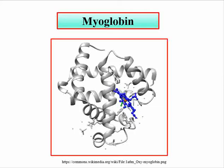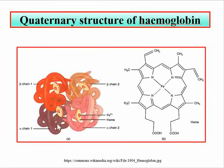Looking at the structure of myoglobin, you can see one helical protein containing 153 amino acids and one heme group. In hemoglobin there are four subunits: two beta chains and two alpha chains, along with four heme groups — making it a tetramer with four subunits of protein and four heme groups.